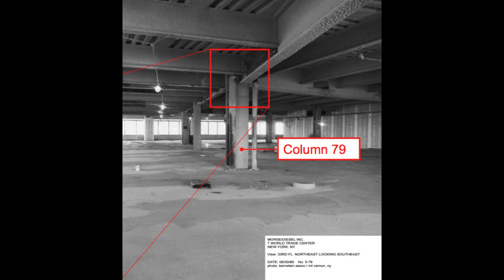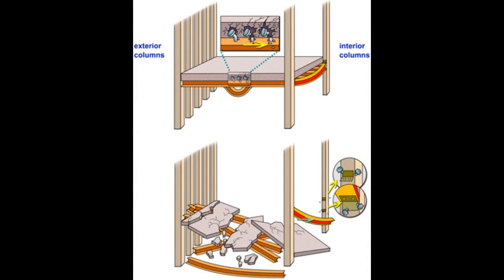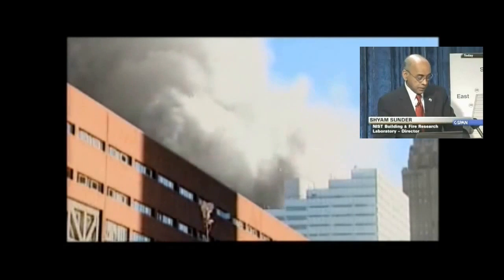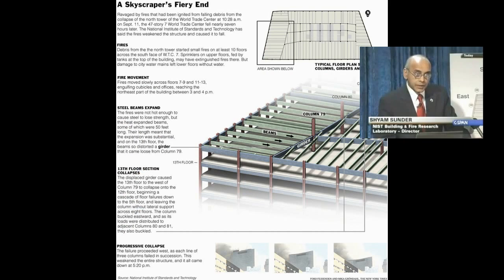In the first two parts of this series of videos, we examined NIST's story about the collapse of World Trade Center 7. One of the things that NIST says is that for World Trade Center 7, thermal expansion was a critical factor.